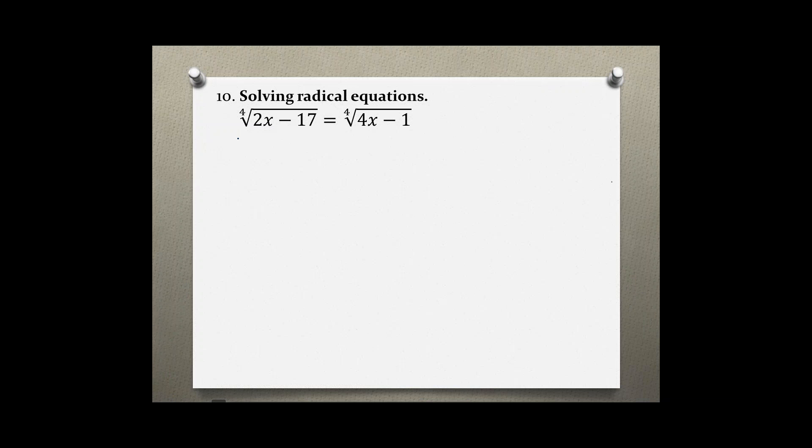Problem number 10, solving radical equations. We have the 4th root of 2x minus 17 which is equal to the 4th root of 4x minus 1.